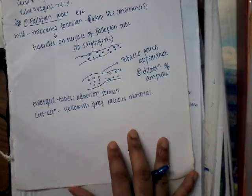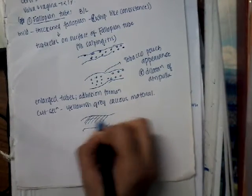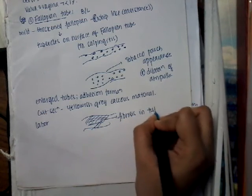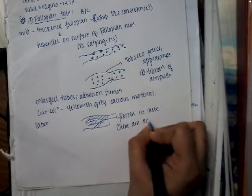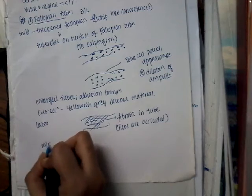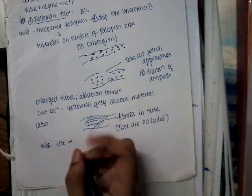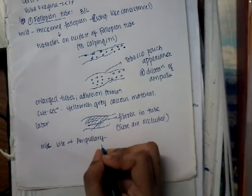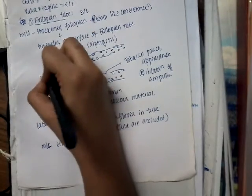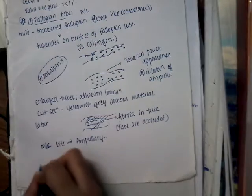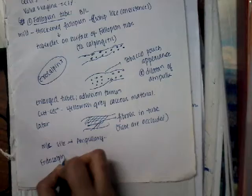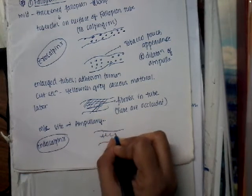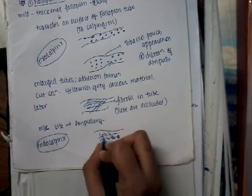Fibrosis occurs in the tube and finally the tubes are occluded. The most common site involved in tubal tuberculosis is the ampullary part. If there is exosalpinx involvement (outside the salpinx), the described changes occur. If there is endosalpinx involvement, this causes hyperplasia of the cells and tuberculous granulomas within the cells.